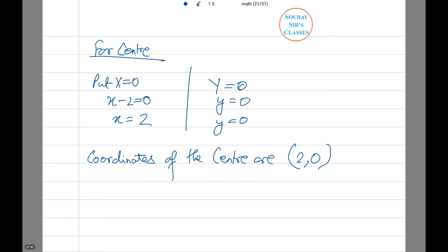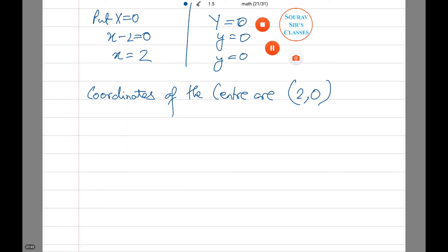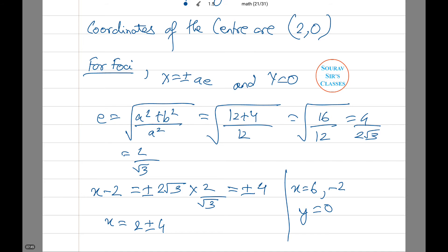Now for foci, x equals plus minus ae and y equals 0. e is equal to square root of a squared plus b squared by a squared, which is equal to square root of 16 by 12, that is 4 by 2 root 3, or 2 by root 3.